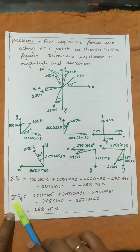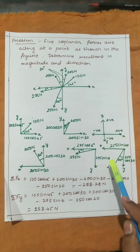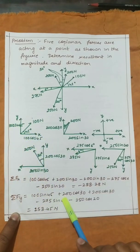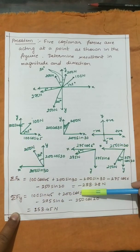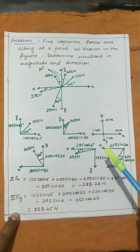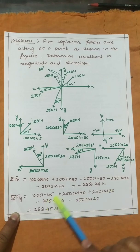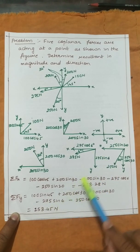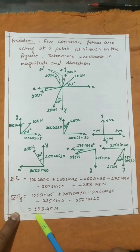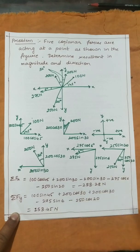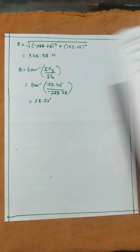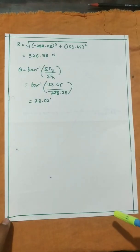Then sigma Fy: upward components are positive and downward are negative. Sigma Fy = 100 sin 45 + 200 cos 30 + 200 cos 30 − 275 sin 6 − 250 cos 20, which gives 153.45 N.